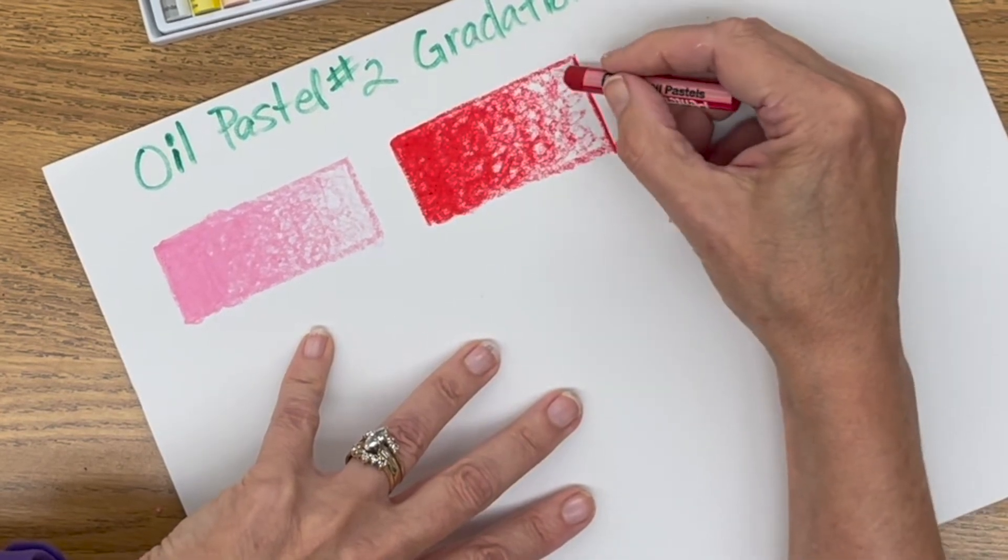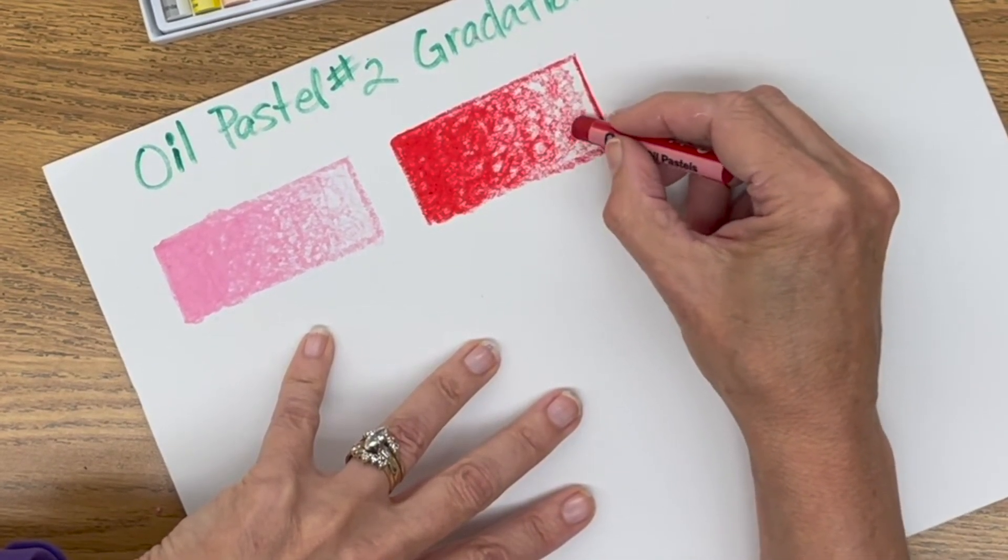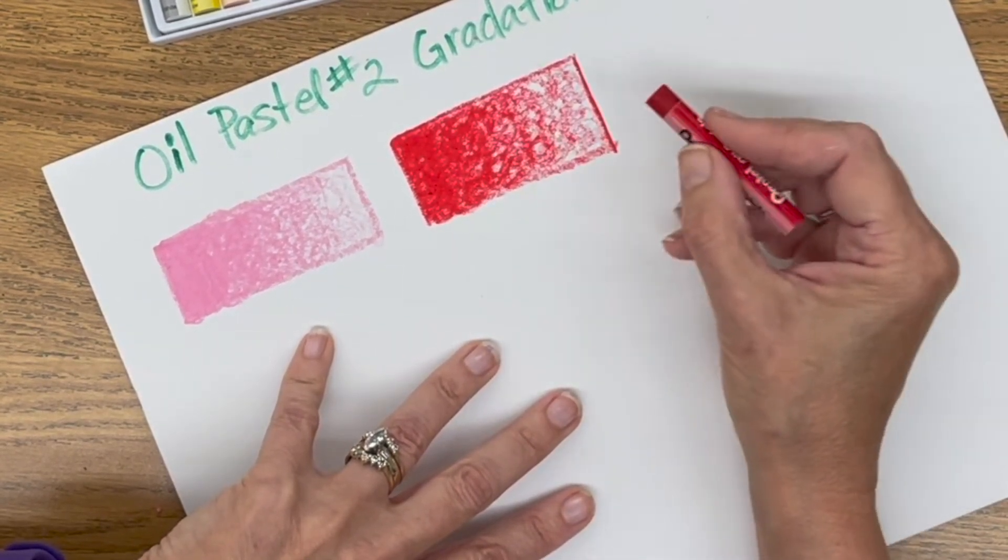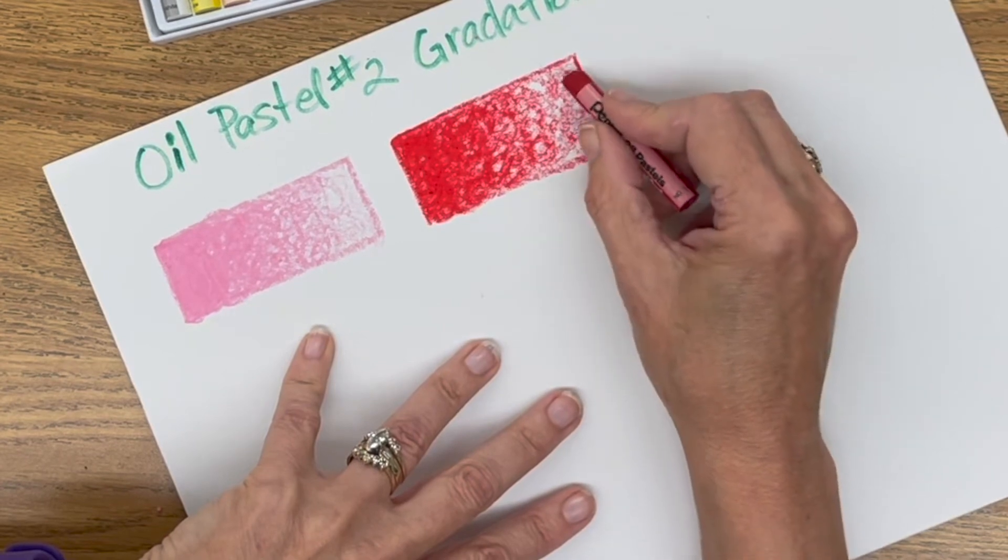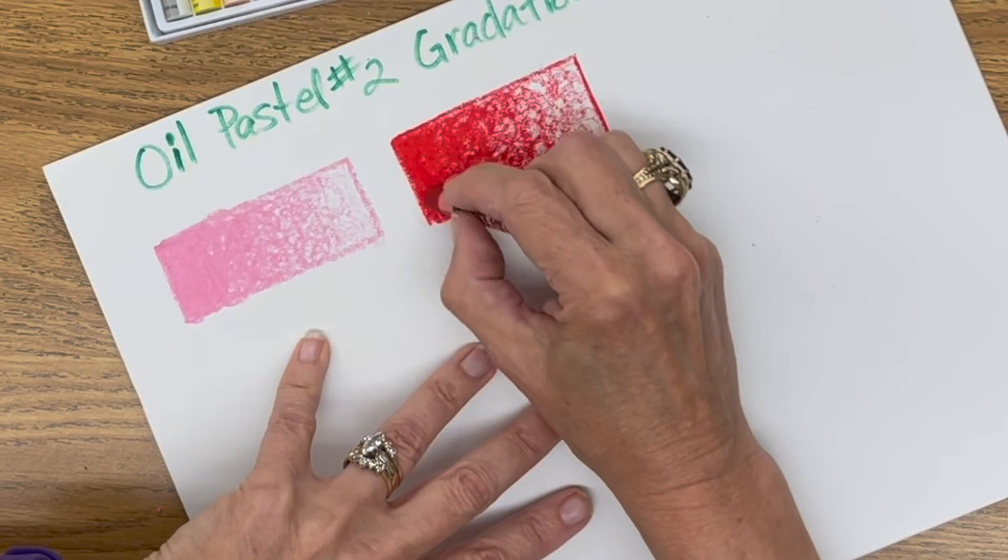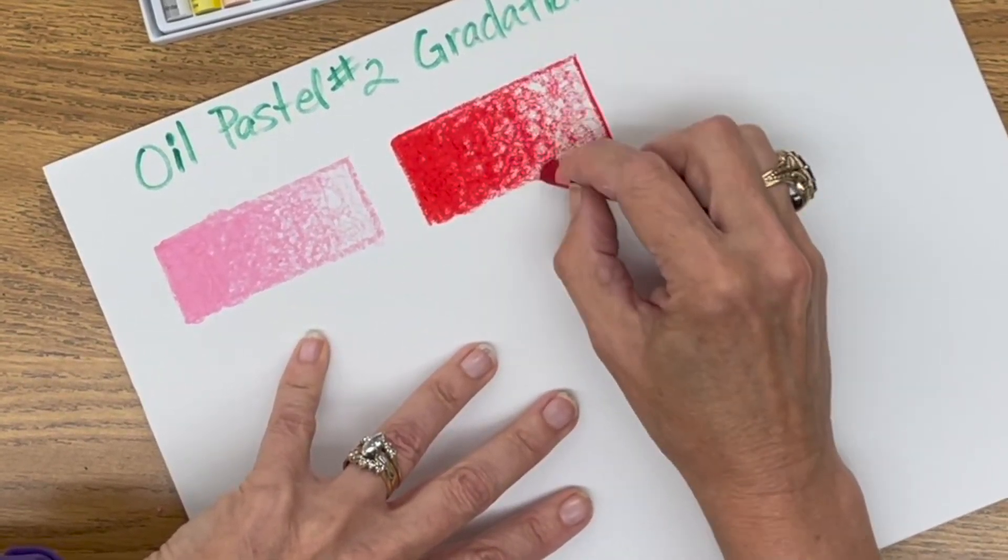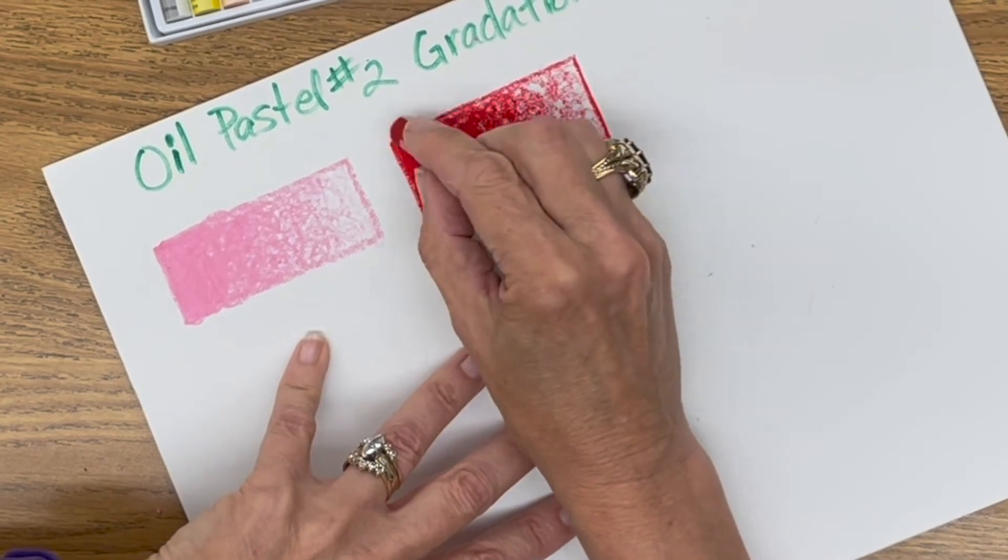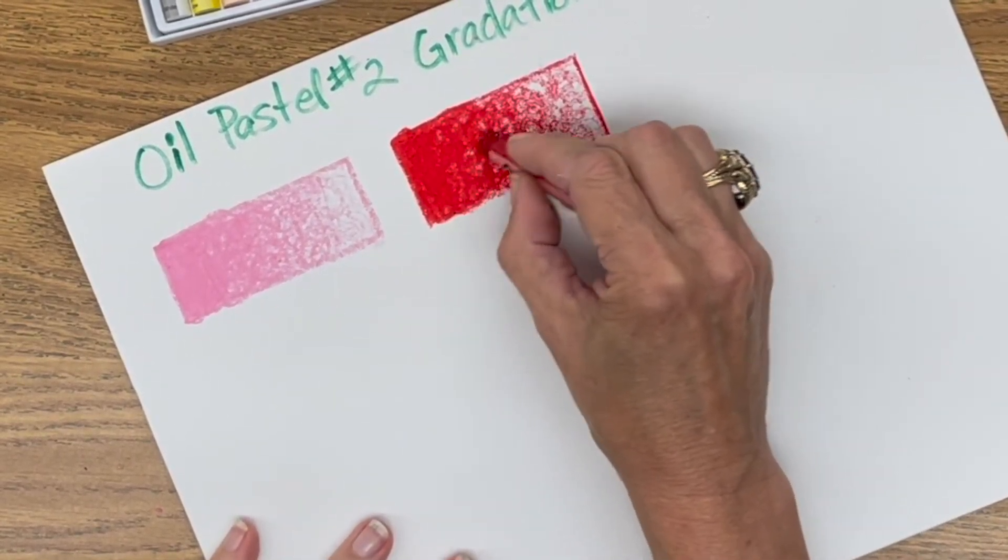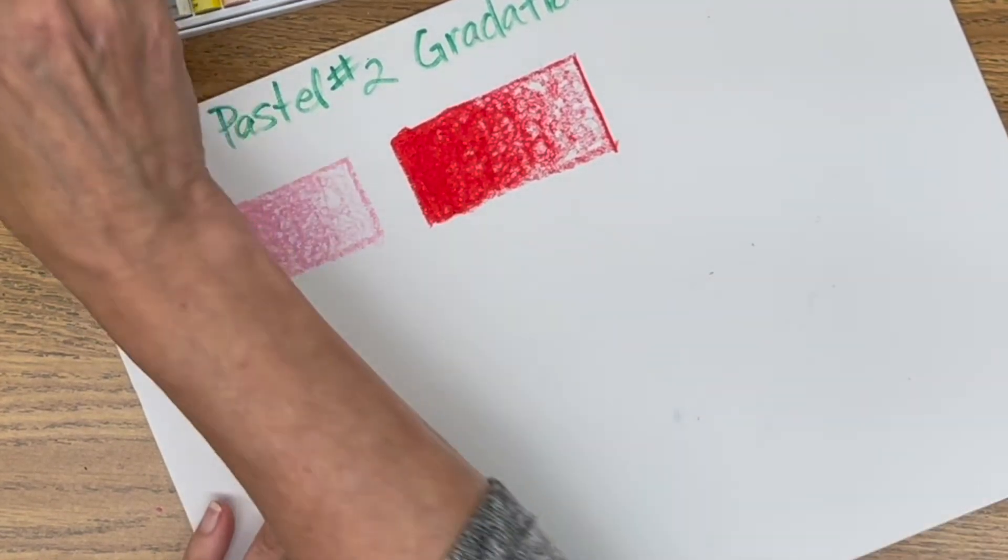It's harder to get a super light value with a darker color like red. So when you get to this end, you're barely, barely, barely touching the paper. So I am going to start back at the dark end. Okay. I think that's probably as good as it's going to get.